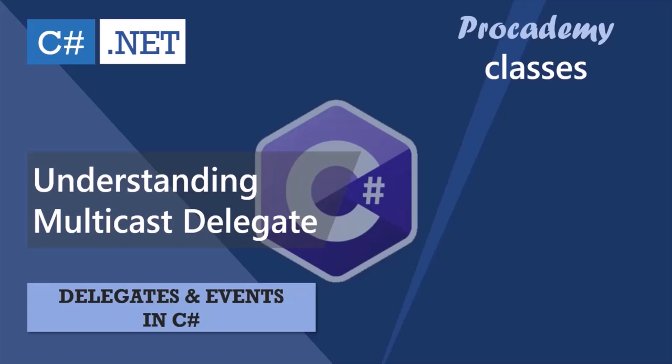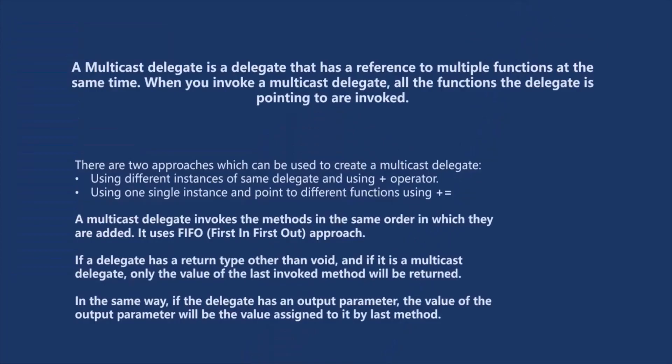In this lecture, I will explain what a multicast delegate is and how we can create and use a multicast delegate. A multicast delegate is a delegate that has a reference to multiple functions at the same time. When you invoke a multicast delegate, all the functions the delegate is pointing to will be invoked. Let's understand this with an example.